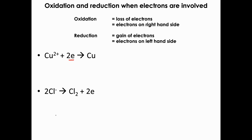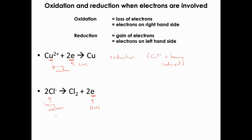Looking at the two examples: Cu2+ plus 2 electrons gives copper. The electrons are on the left-hand side, so the Cu2+ is gaining electrons — this is an example of reduction; the Cu2+ is being reduced. In the second example, 2Cl- gives Cl2 plus 2 electrons. The electrons are on the right-hand side, so the chlorine on the left is losing electrons — that's oxidation; the Cl- is being oxidised.